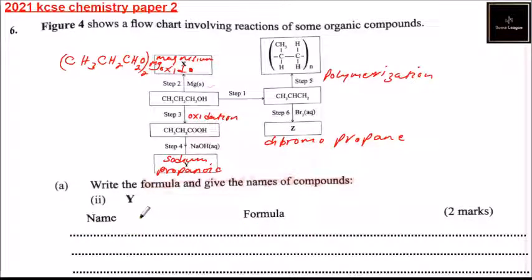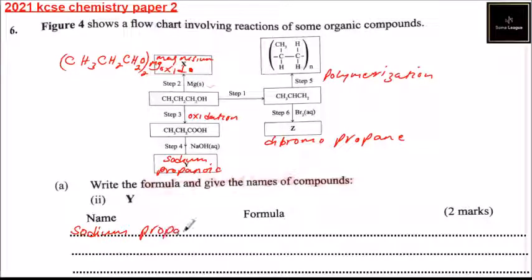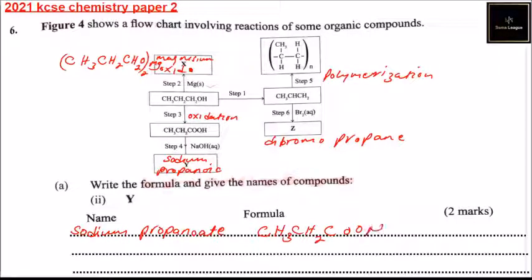Roman numeral 2: give a formula and the name of compound Y. So Y is sodium propanoate. The formula is CH3, CH2, COO, Na. That is the formula, and you get 2 marks.